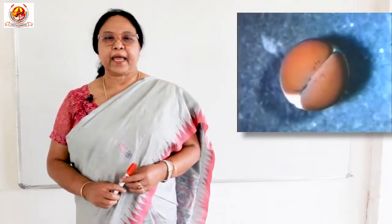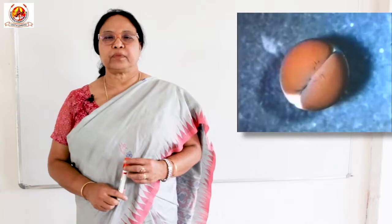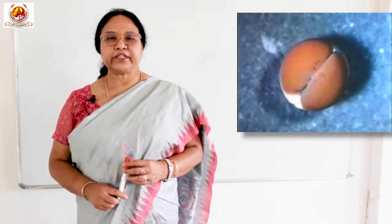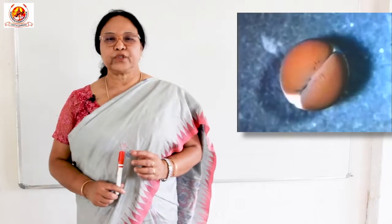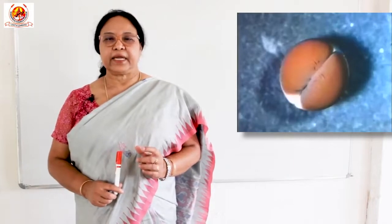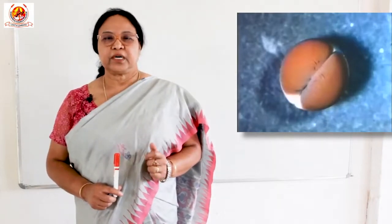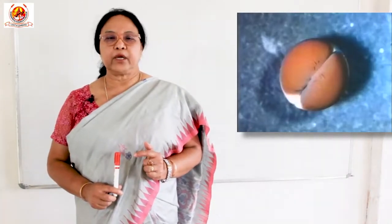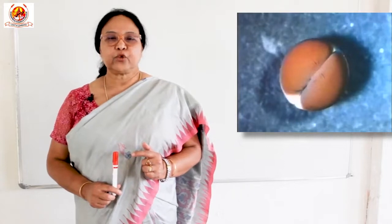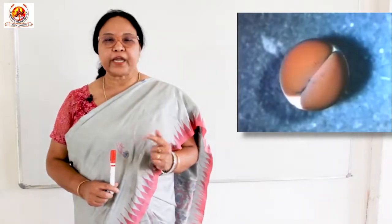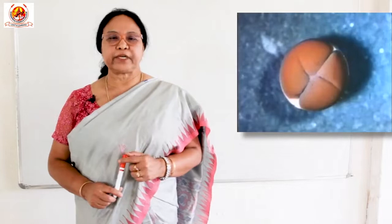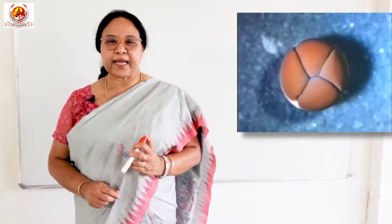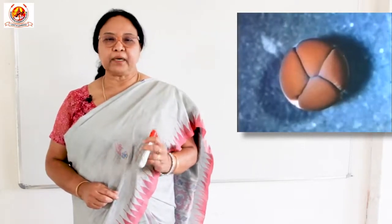The egg of frog is of telolecithal type and contains much yolk which is concentrated in the vegetal hemisphere. Therefore, the third set of divisions, due to unequal distribution of yolk, the mitotic spindles are oriented parallel to the equator towards the animal pole. The four blastomeres are not only unequal in cleavage, but also unequal in size.